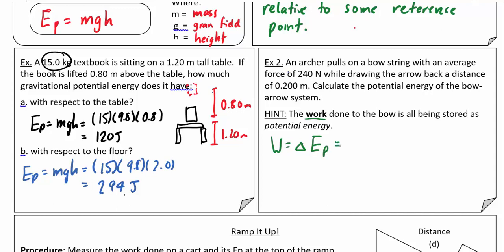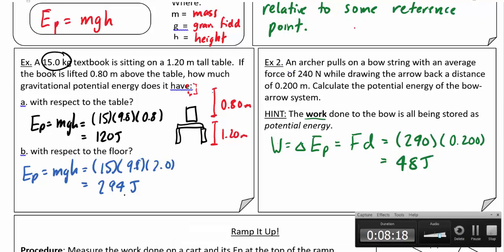The change in potential energy would be equal to the work, and you might recall from last day that work is equal to force times distance. Since they use an average force of 240 newtons and they pull it back a distance of 0.200 meters, this works out to be about 48 joules of energy stored in that bow. Okay, that's it for potential energy.